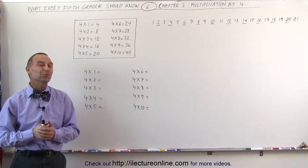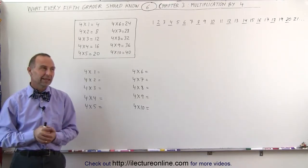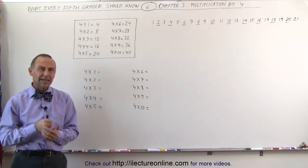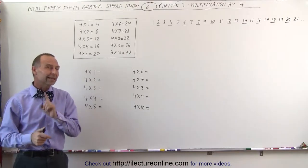Welcome to ElectronLine. Now let's do multiplication by 4. Multiplication by 4 is kind of like times 2, but double. And that kind of gives us an idea.